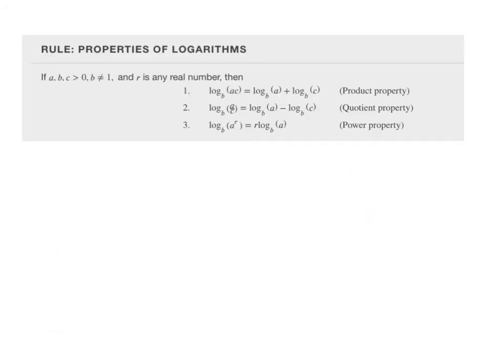Just like exponential functions, logs have their own properties. Log of a product can be broken apart into a sum of two separate logs. Log of a quotient breaks apart into a difference of two logs. And the log of something raised to a power: that power drops down in front of the log term and gets multiplied by it.